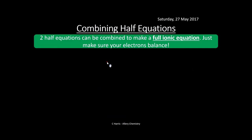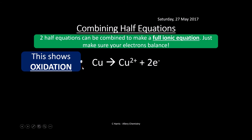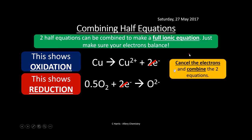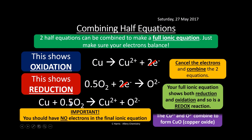Two half equations can be combined to make a full ionic equation, as long as the electrons balance. The oxidation half: Cu → Cu²⁺ + 2e⁻. The reduction half: O₂ + 2e⁻ → O²⁻. Cancel the two electrons from both sides, then combine everything on the left and right of each arrow. The final ionic equation must contain no electrons. This combined equation shows both reduction and oxidation — a redox reaction — and the Cu²⁺ and O²⁻ will effectively combine to form copper oxide.